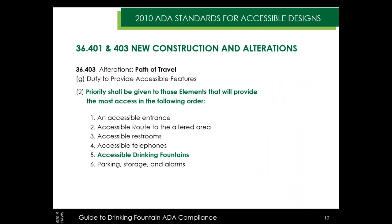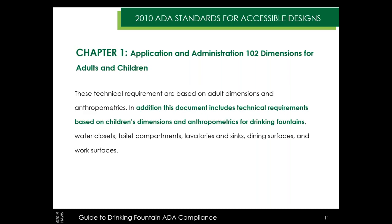Section 36.403 gives us a list of priorities when making alterations to provide accessibility in your facility. Drinking fountains take a pretty high priority — even over accessible parking. The list includes entrance routes, restrooms, public telephones, fountains, parking, storage, and alarms. Chapter 1, Section 102 lets us know that the document contains both adult and children's requirements based on anthropometrics — the measurements and capabilities of the human body. Children are defined as age 12 or younger in the ADA.